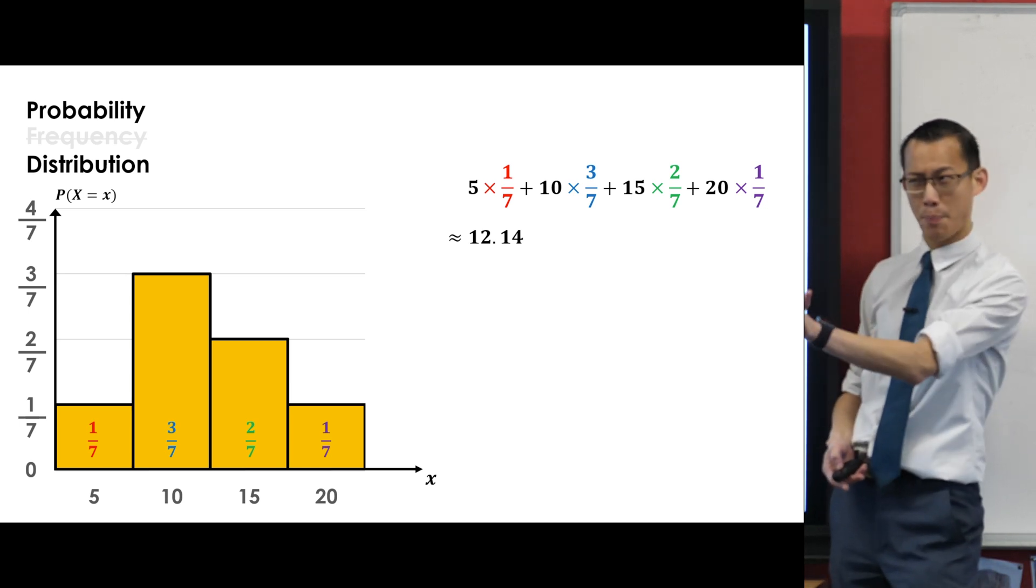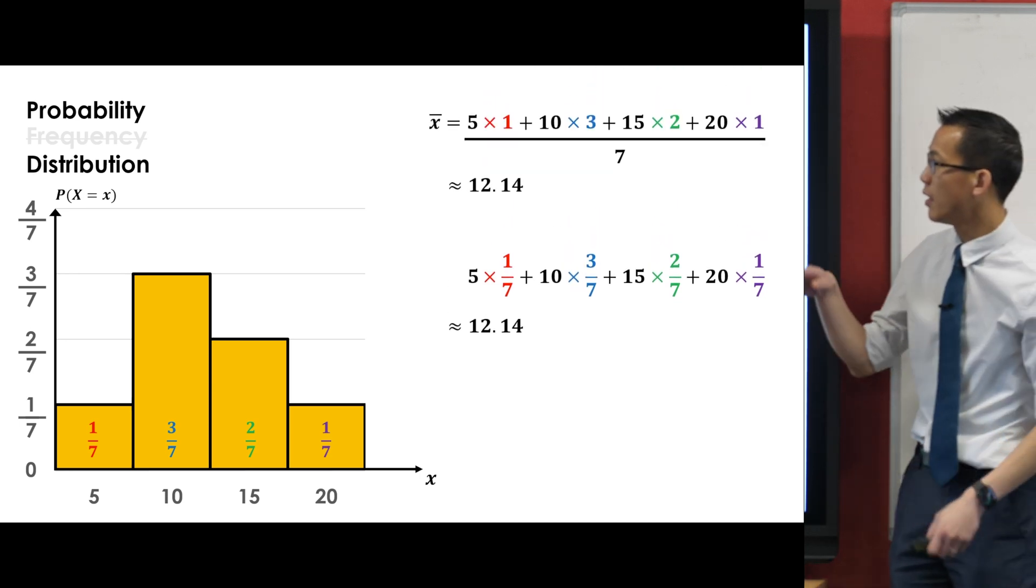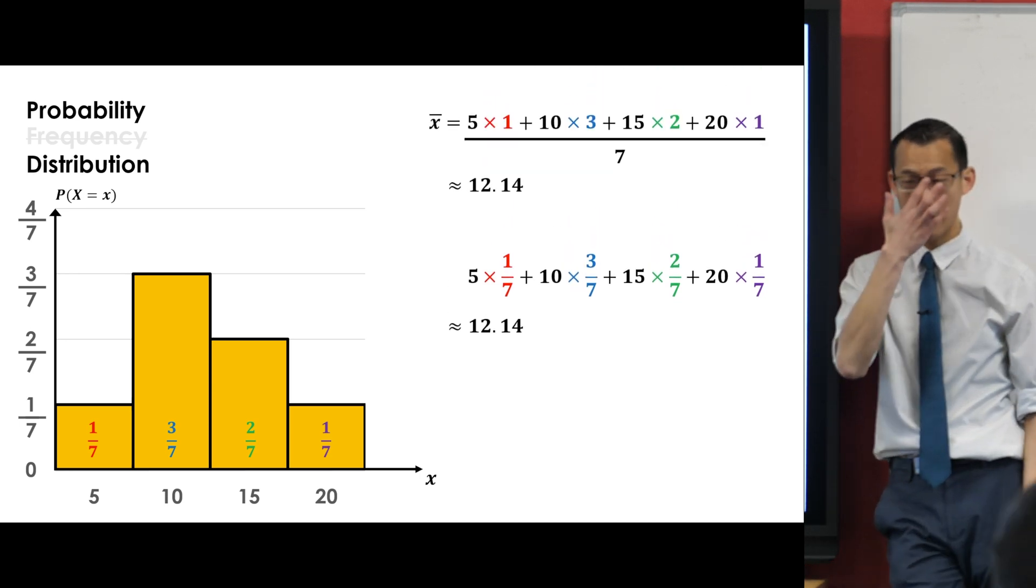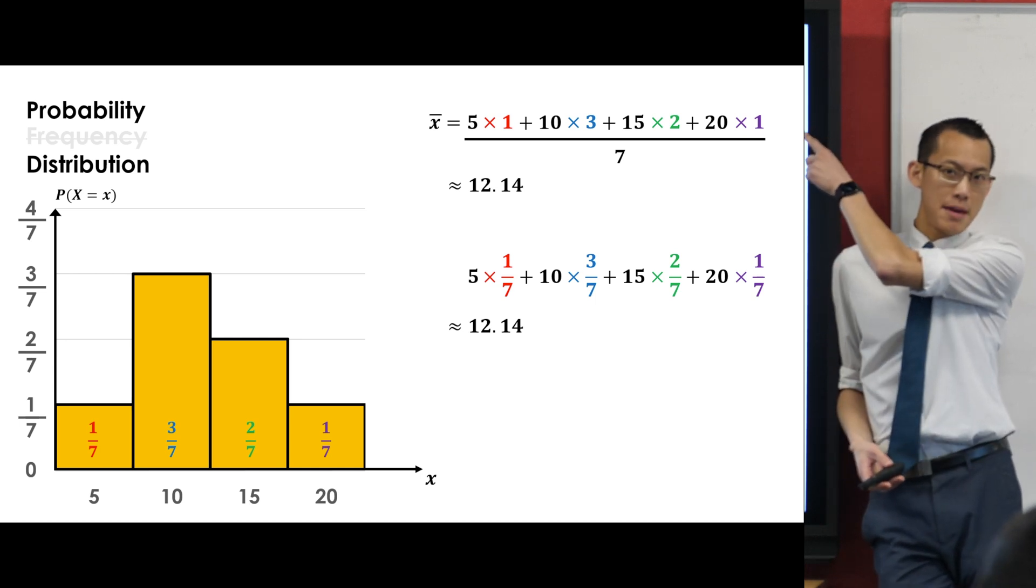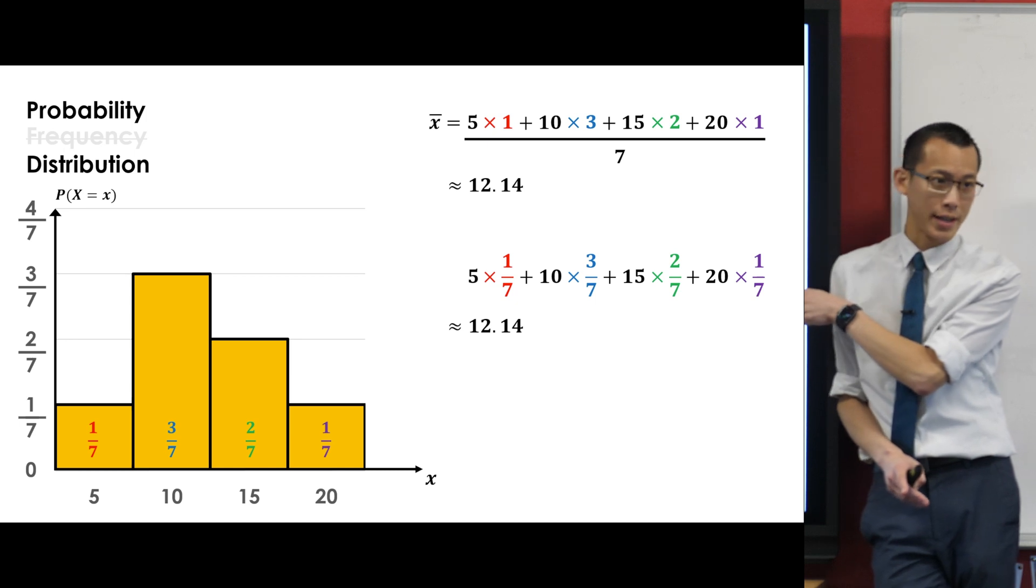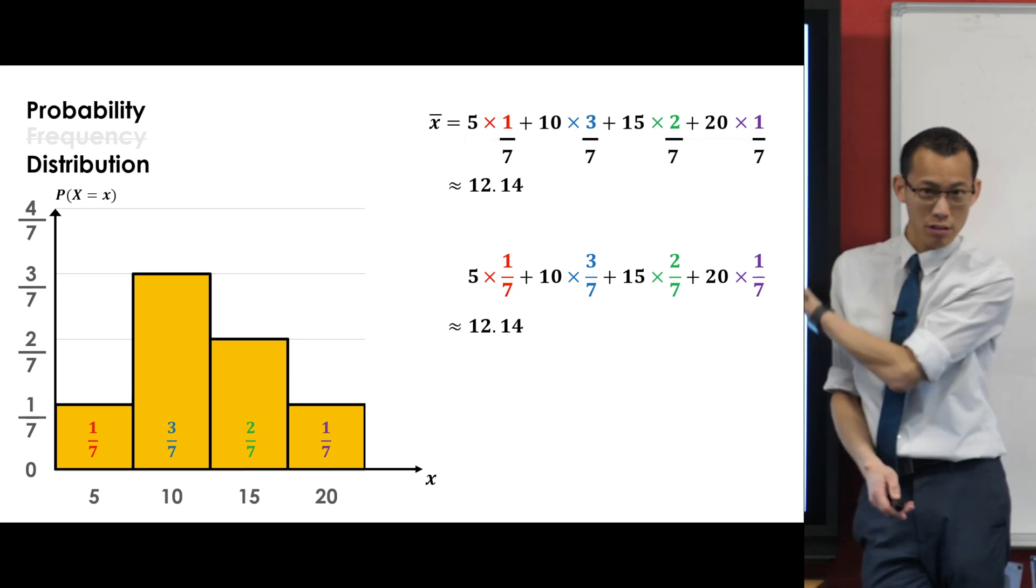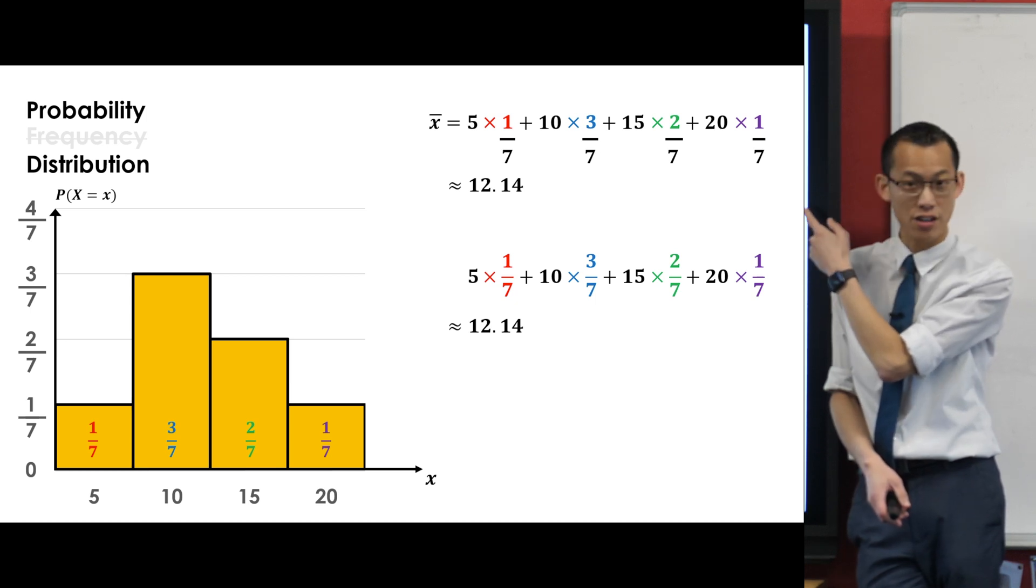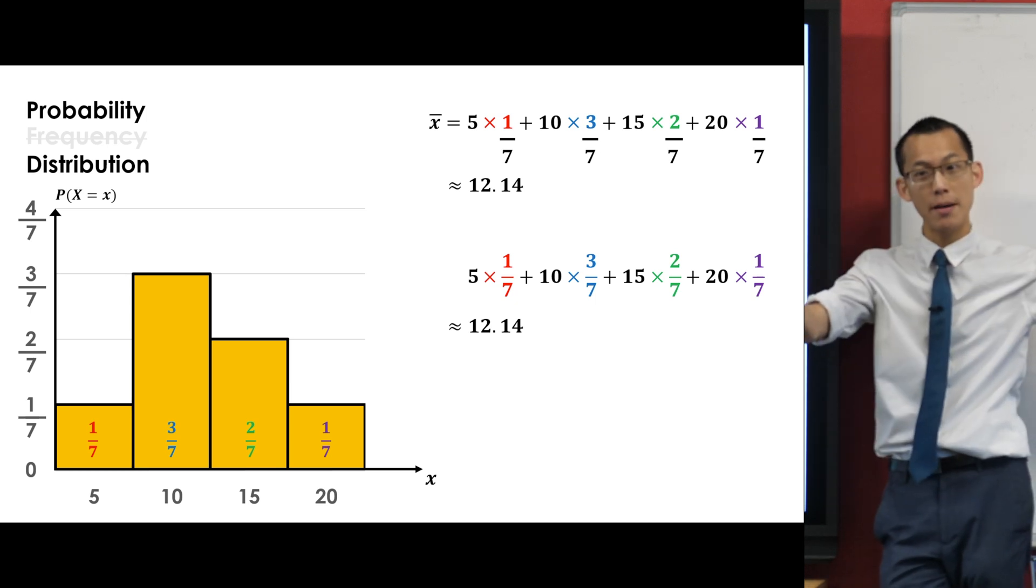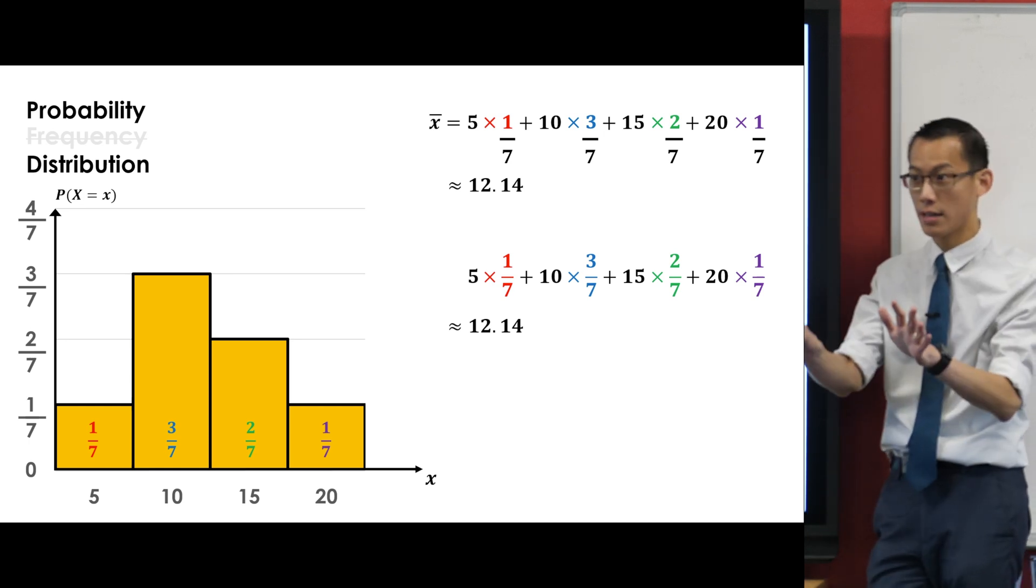Now just to make it really painfully obvious for you, and I'd love you to have this written down because we're going to refer to it in a second, just have a look at the two calculations side by side. This is us working out the mean on a frequency distribution. This is us working out on a probability distribution, but look, they are the same thing. Like you can see the whole thing's been divided by seven which is the same as dividing each one by seven individually which is your probabilities. Make sense?